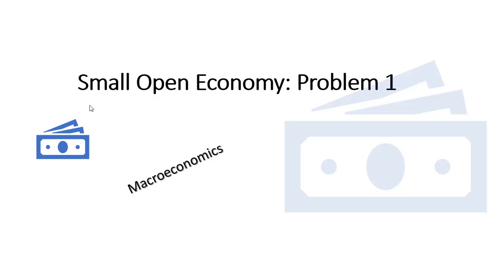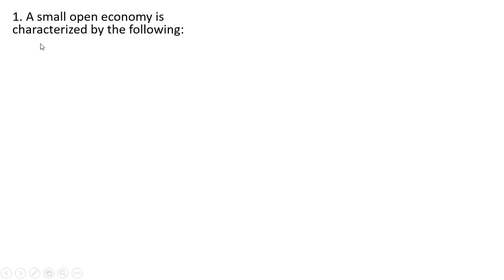Hello. In this video, we're going to look at a small open economy and do a couple problems. A small open economy is characterized by the following: GDP is 5,000, government spending is 1,500.